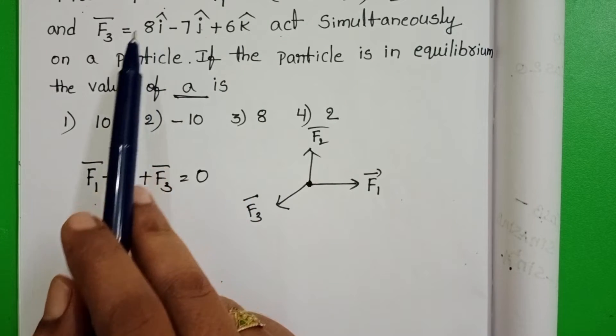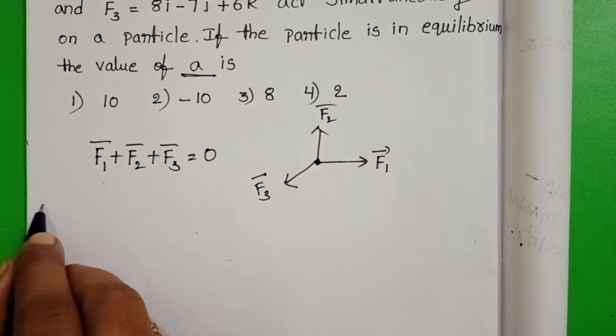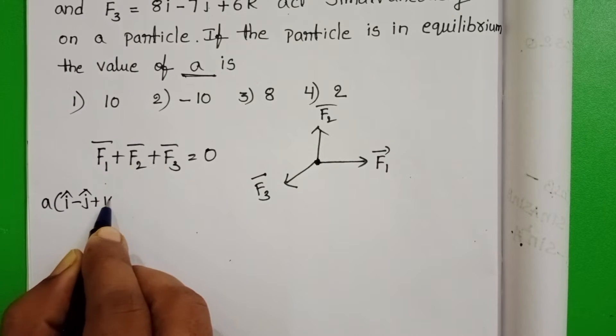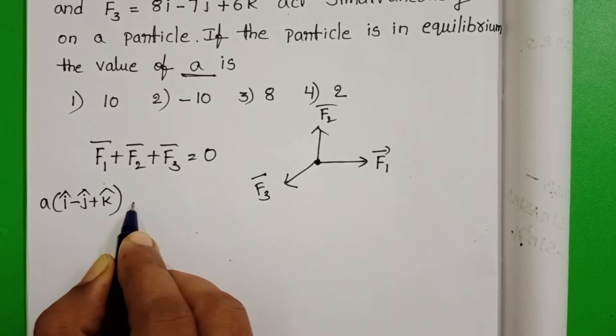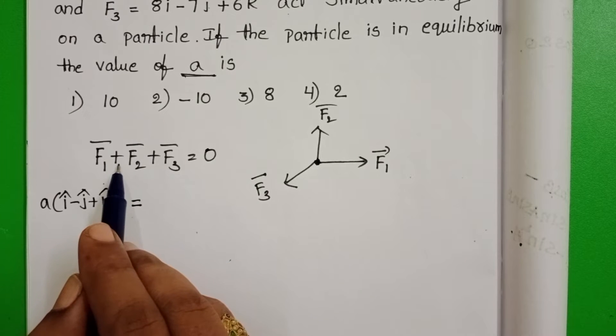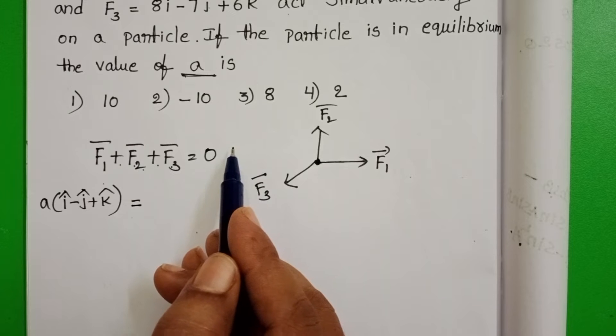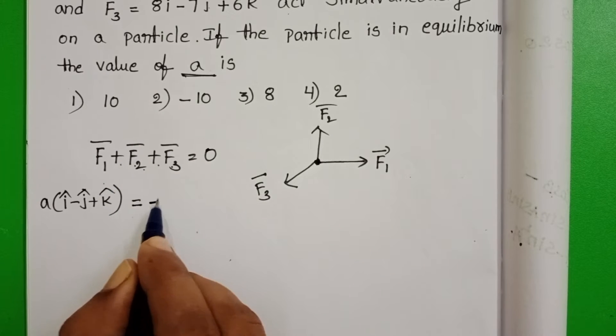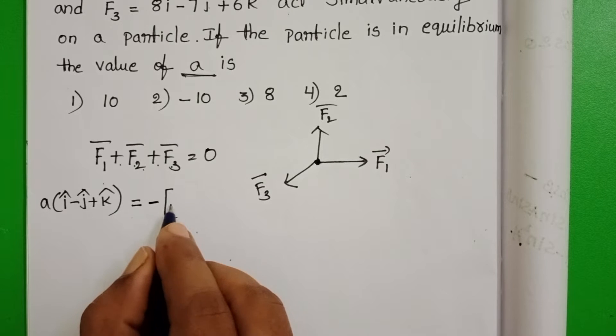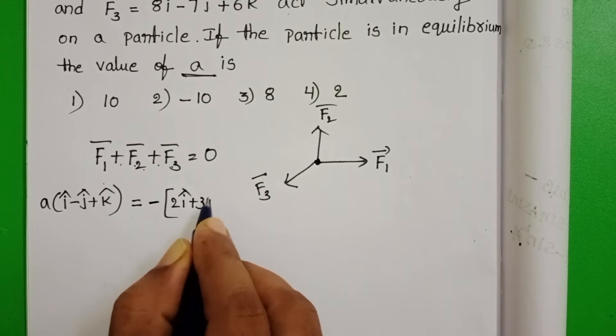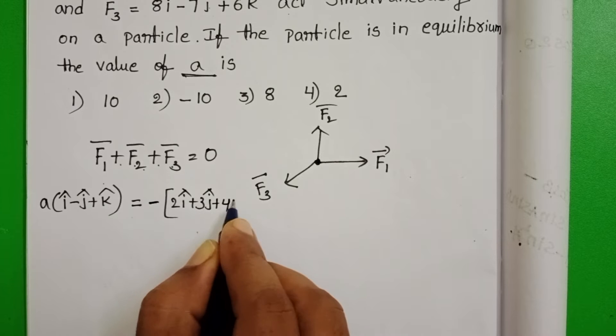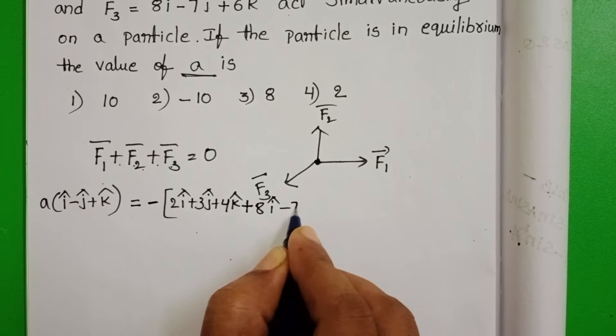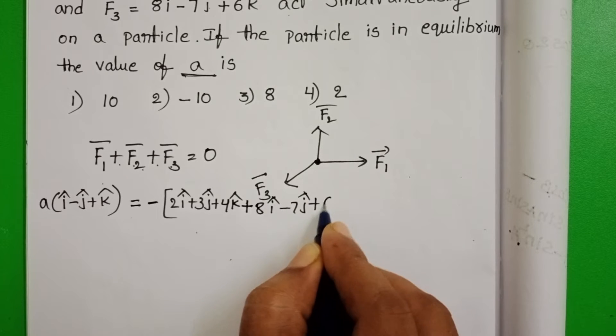We know F1, F2, and F3. Substitute here. A times (i cap minus j cap plus k cap) equals negative of F2 plus F3. F2 is 2i cap plus 3j cap plus 4k cap, and F3 is 8i cap minus 7j cap plus 6k cap.